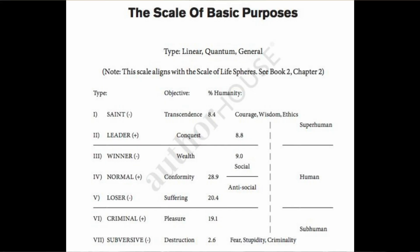This is the first of the individual scales — scales that apply more to individuals than to groups. This is the Scale of Basic Purposes, the first scale in the book. It's actually the first scale I discovered that led me to realize Septemics was a separate subject. When you find your level on this scale, it is a life-changing experience. When you find somebody else's level, it's extremely valuable information, because this is a persistent characteristic — more than 90% of people spend their entire life at one level of the scale.